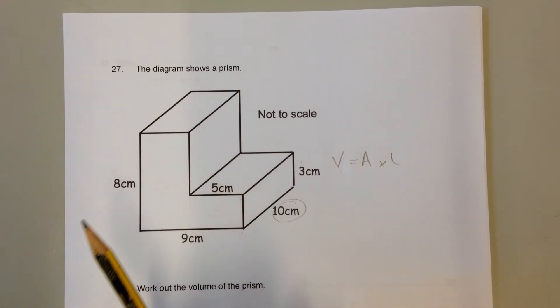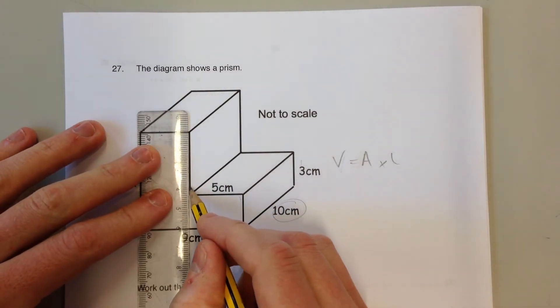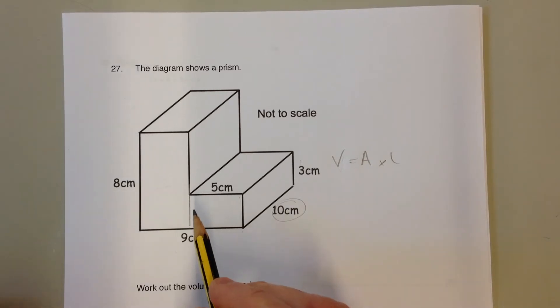Start off by finding the area of this shape. To do that, we need to split it up into two shapes we recognize—two rectangles. To find the area of each rectangle, we multiply together the length and the width.